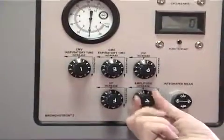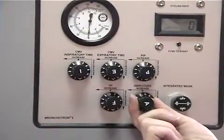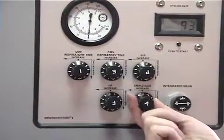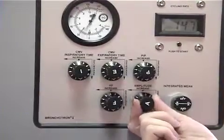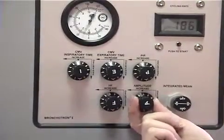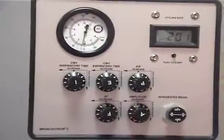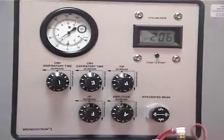The Broncotron has two controls for high frequency ventilation, an A knob for amplitude and an F knob for frequency. You will also notice that all of the conventional ventilation controls are turned off.